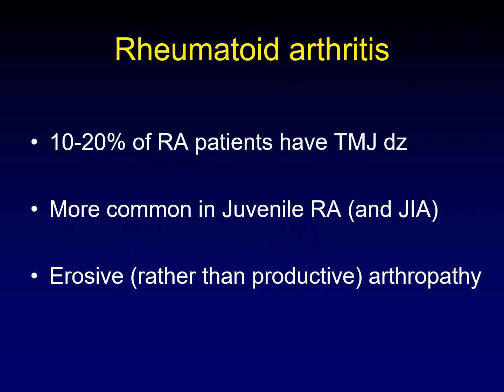Rheumatoid arthritis frequently affects the temporomandibular joints in 10 to 20% of patients. Patients with juvenile rheumatoid arthritis and juvenile idiopathic arthritis have even more common involvement of the temporomandibular joints. This tends to be an erosive arthropathy rather than a productive arthropathy like degenerative disease, and that's our most important distinguishing characteristic.